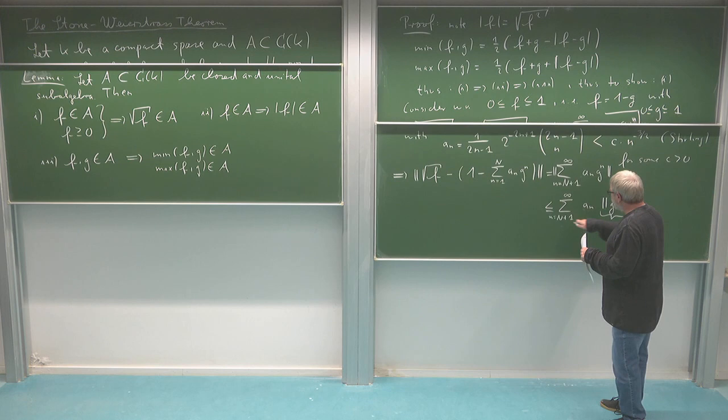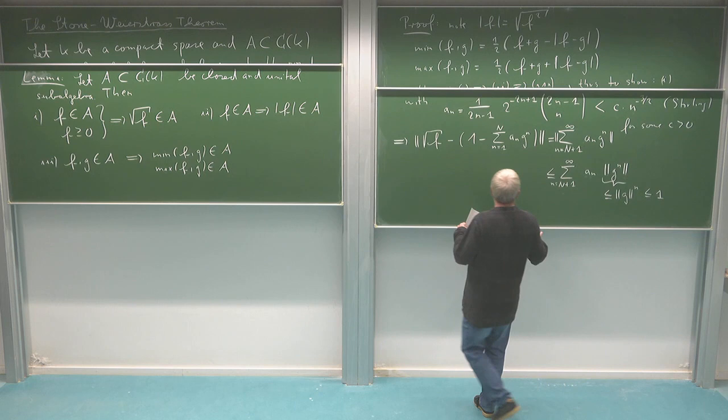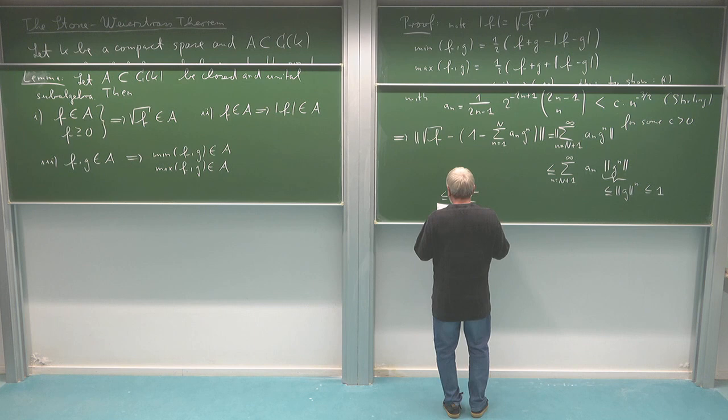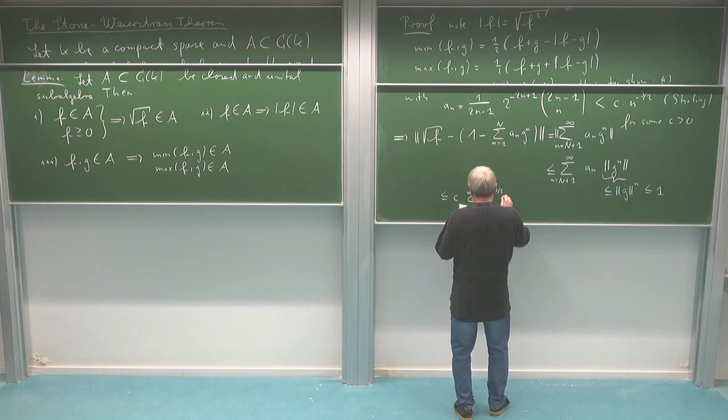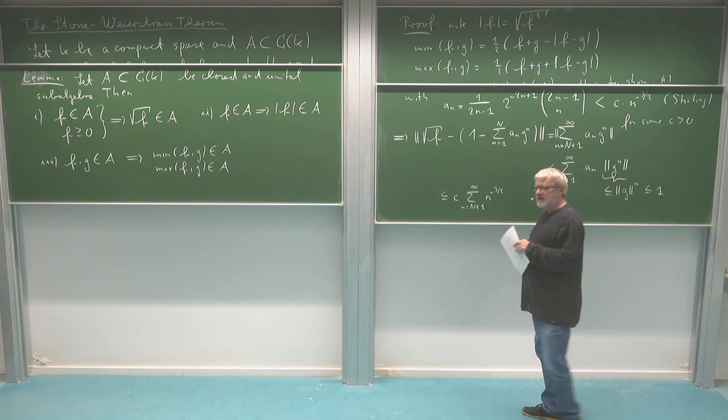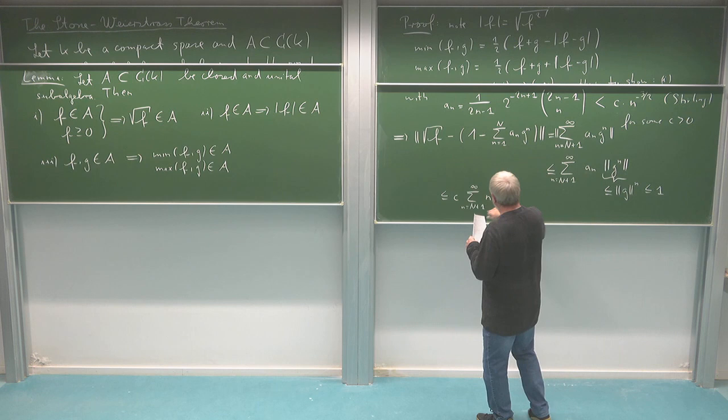So I'm essentially left with just the aₙ's to sum. I have to sum the aₙ's, and I've said they go to zero faster than 1/n — in fact like n^(−3/2) — so they are summable. This means this remainder term, if N goes to infinity, converges to zero.